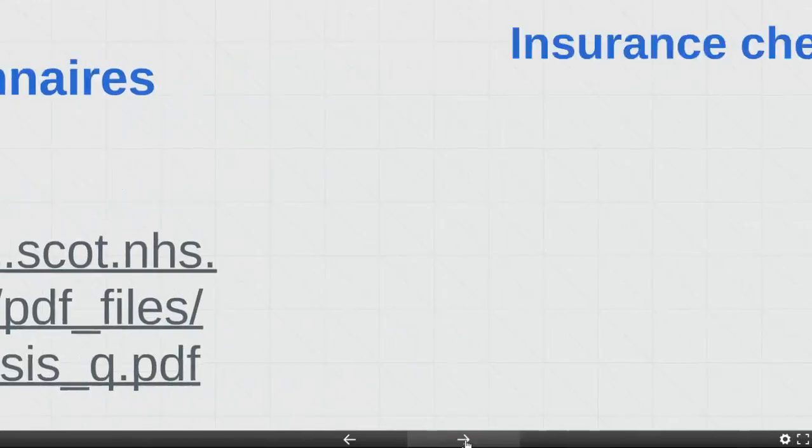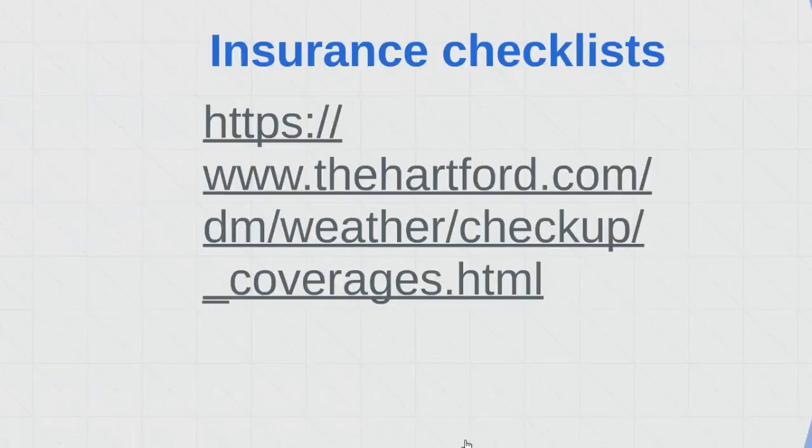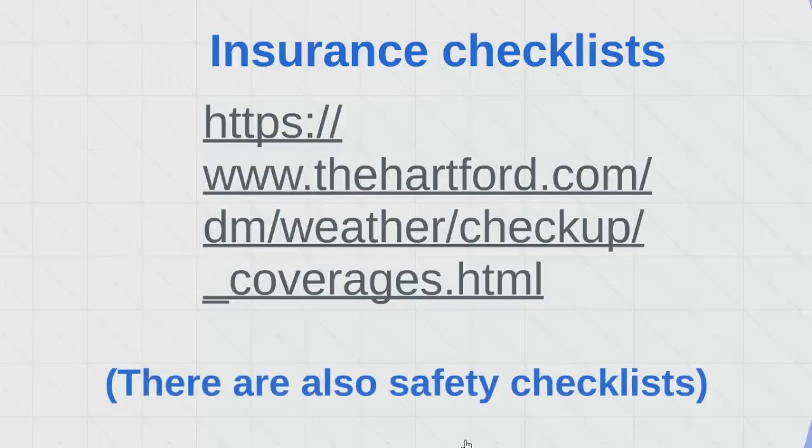Let's go back to our presentation. Here is an example of an insurance checklist. I won't go to this website here in this video, but if you go to this website, you'll find that the Hartford, which is an insurance company, has developed a process for creating a checklist for the insured. Both the risk analysis questionnaire and insurance checklists might be very useful to you in doing your risk assessment paper for this course.